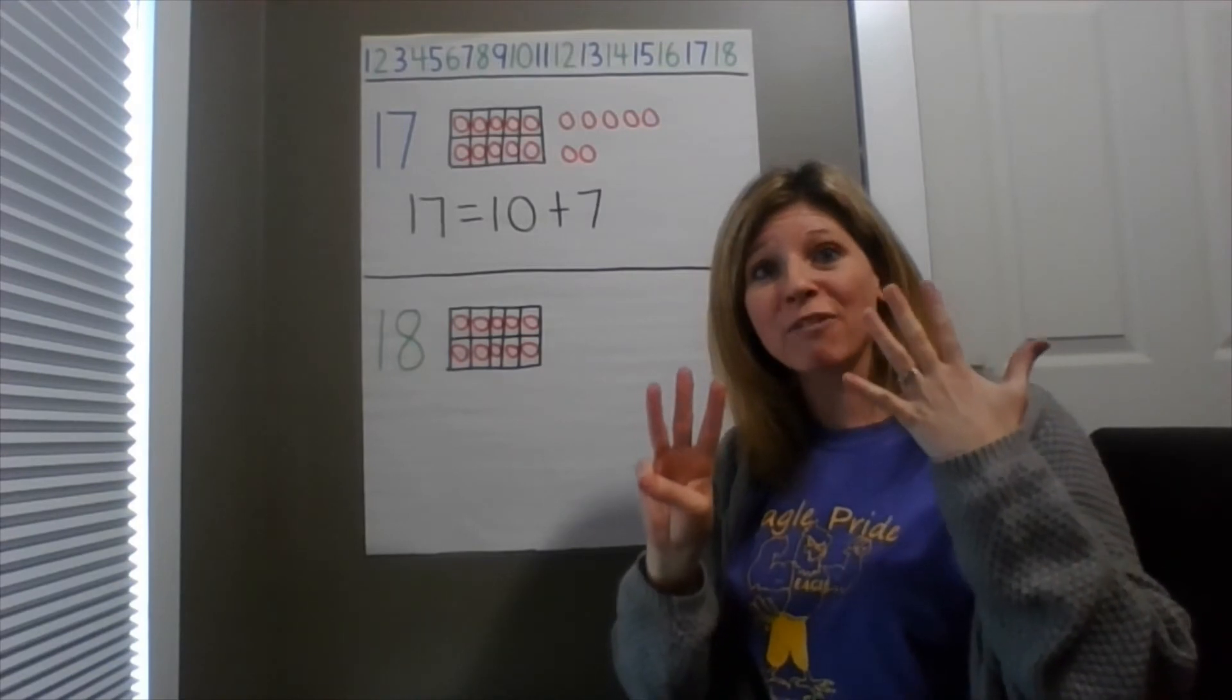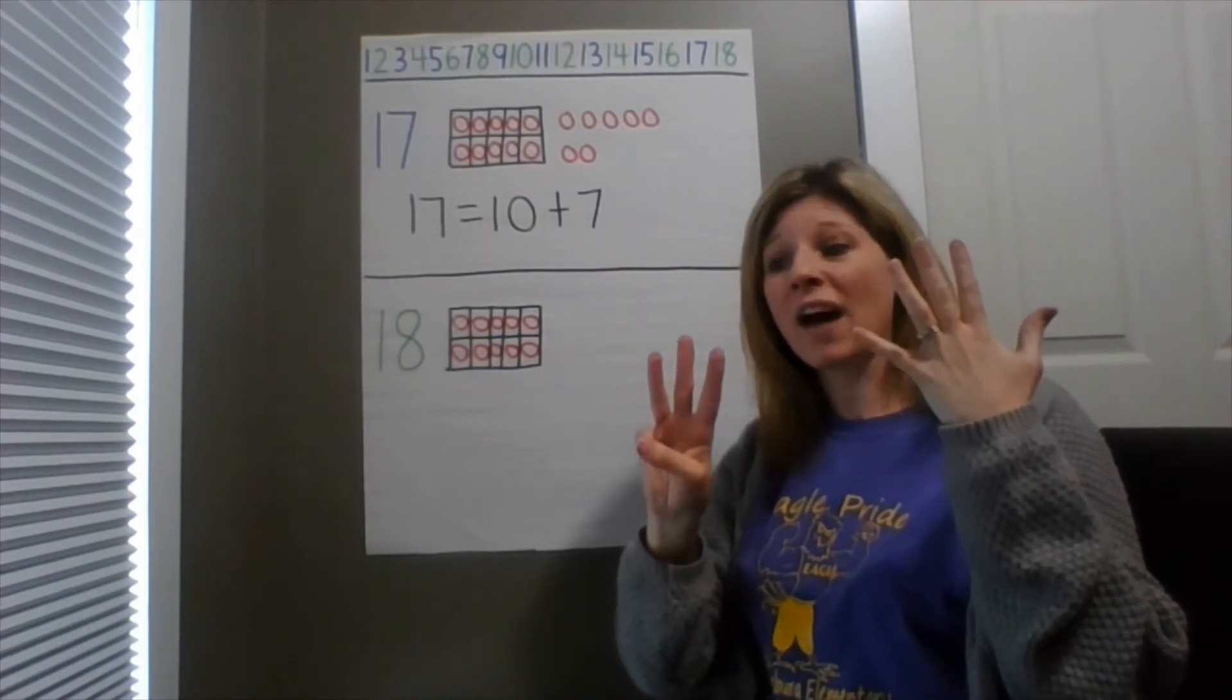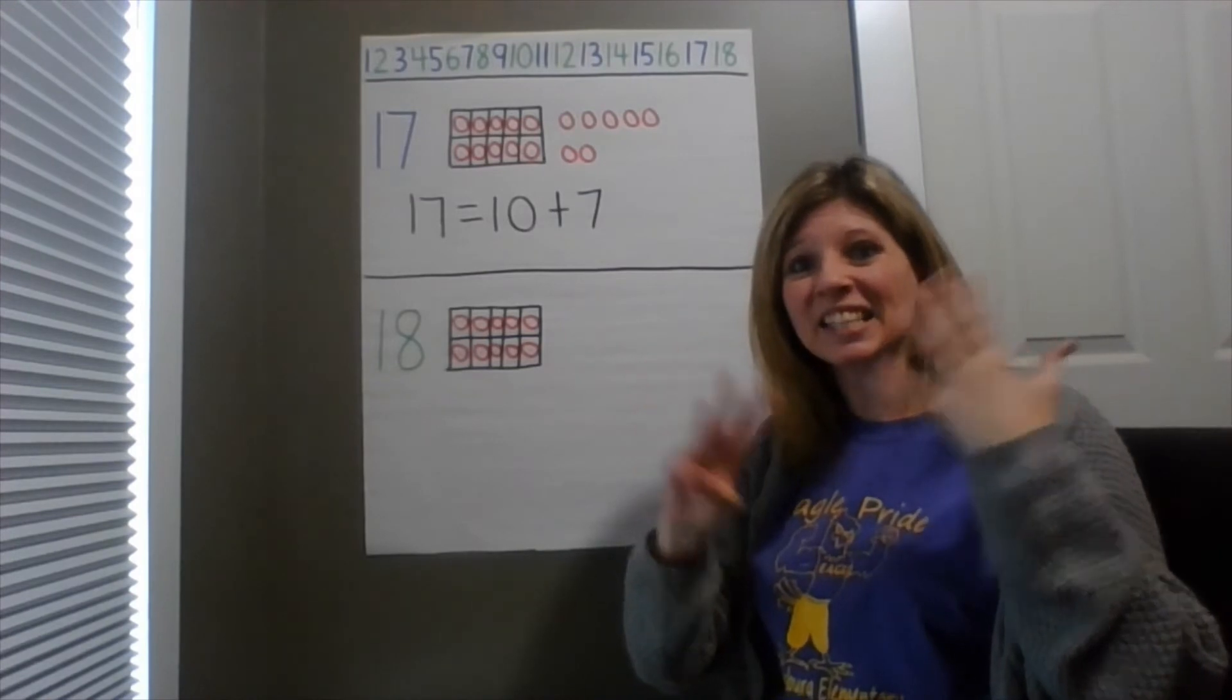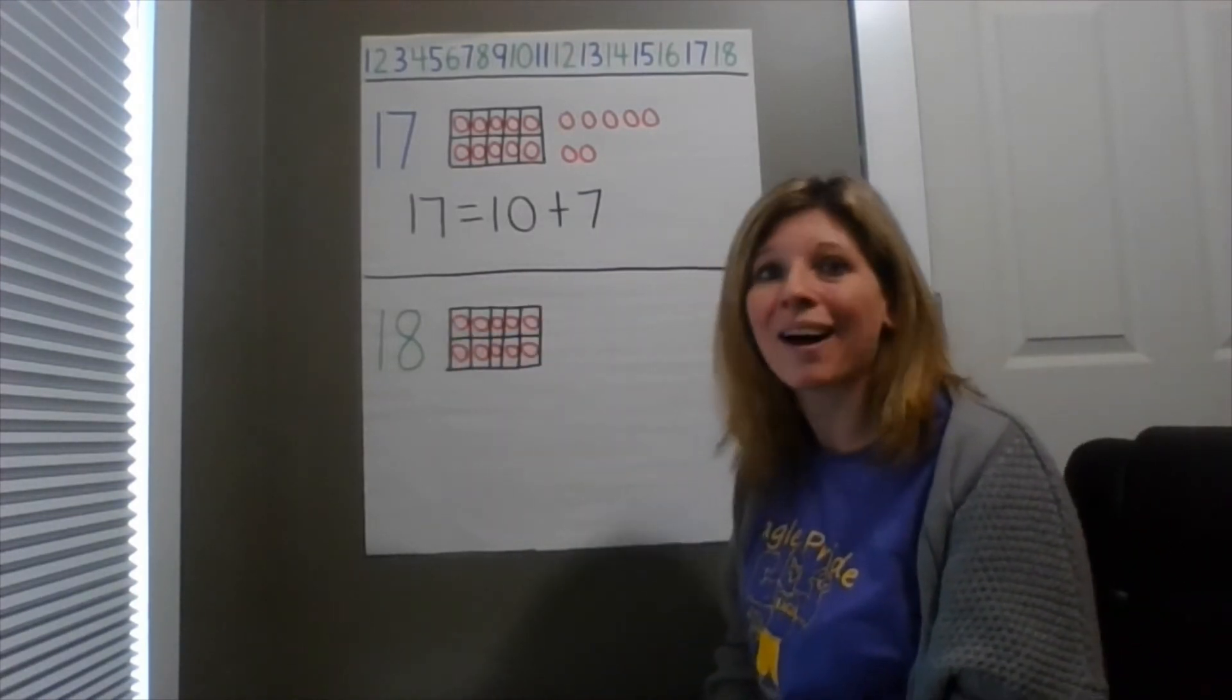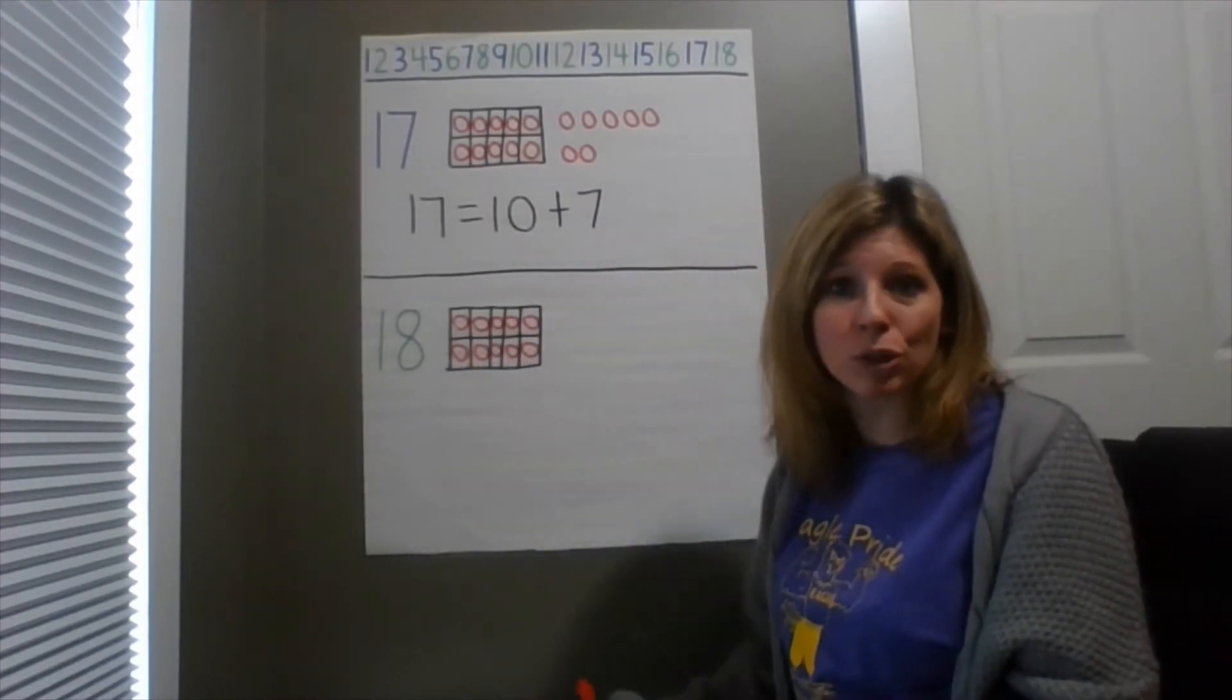So how many fingers do I have up now? I added 1, 2, 3, 4, 5, 6, 7, 8. So 18 is a group of 10 and 8 more.